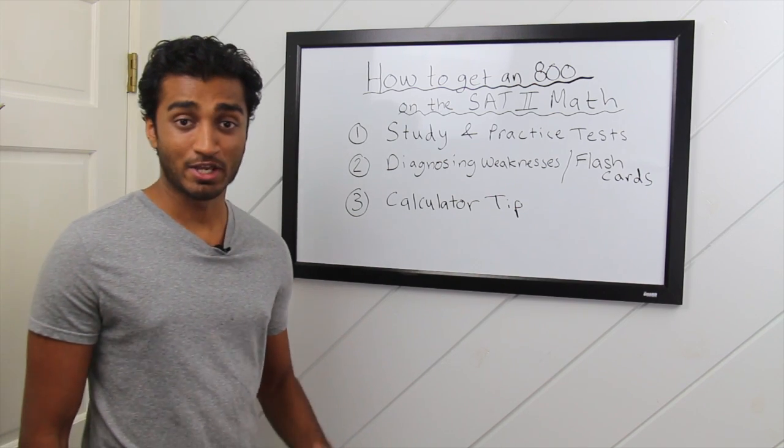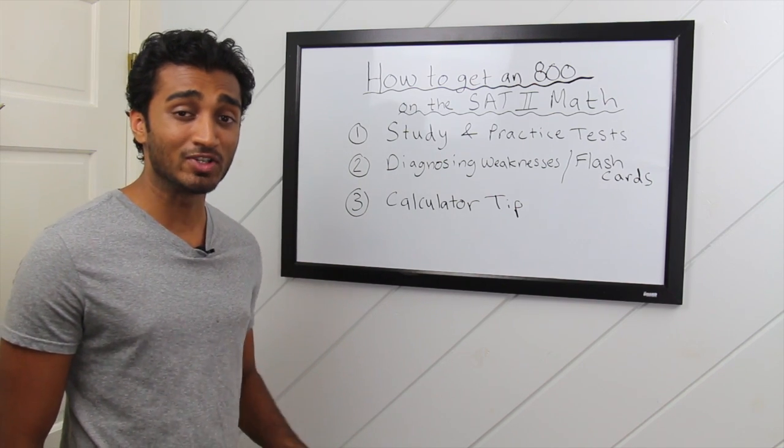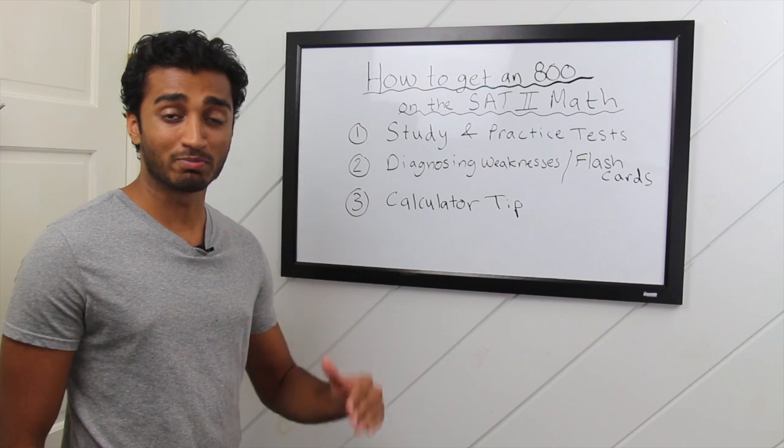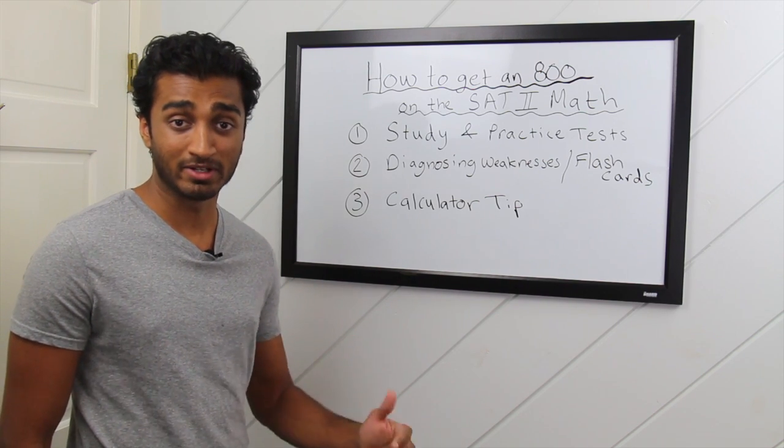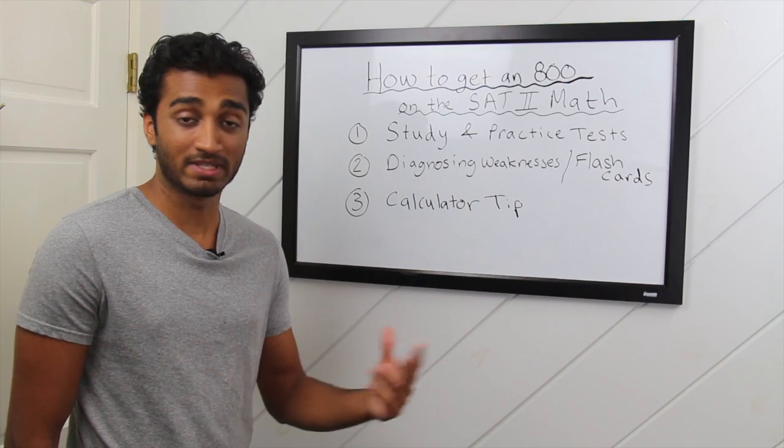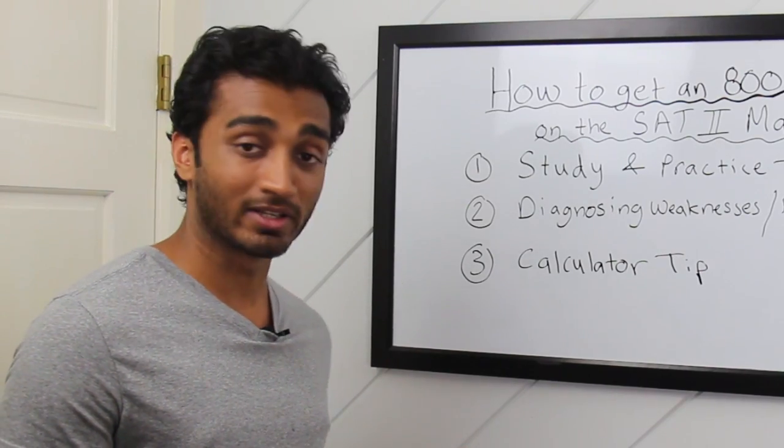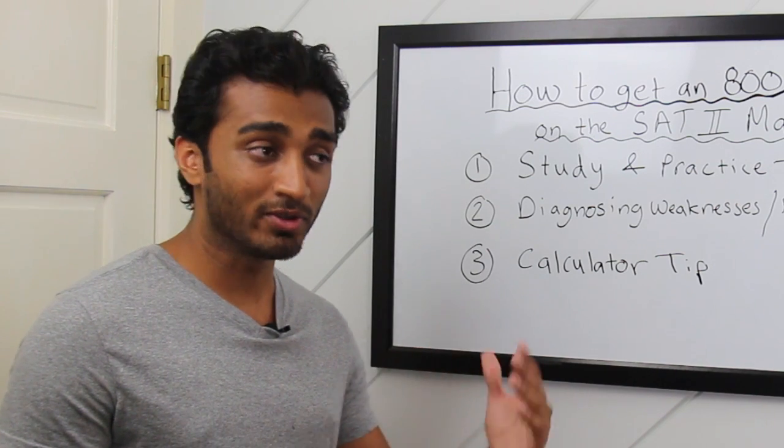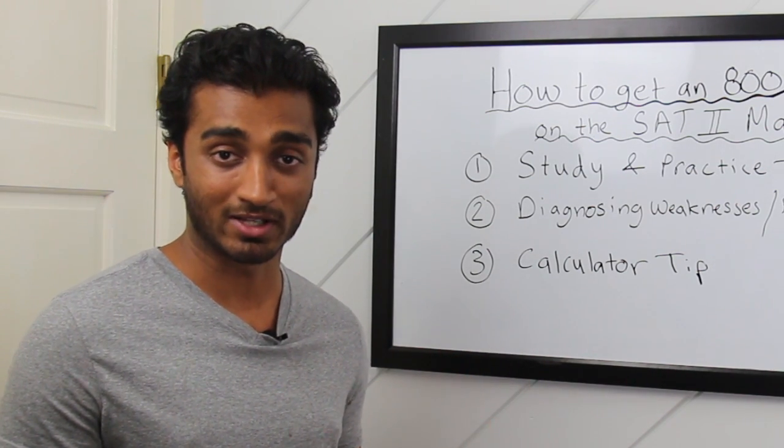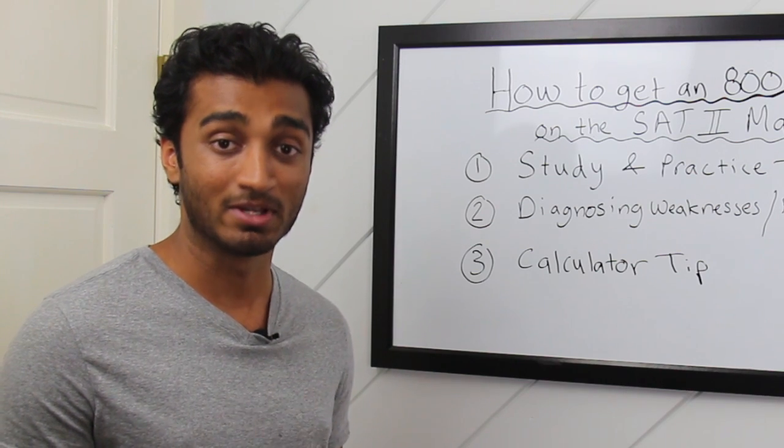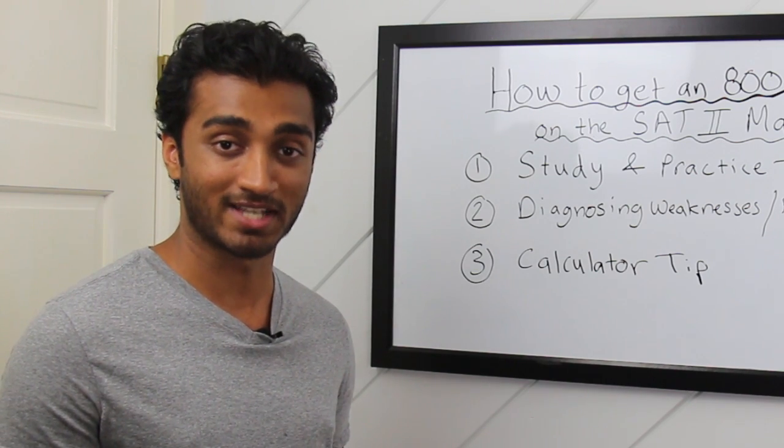In order to save time on test day, you want to program these formulas into your calculator. That way, you just plug in different variables like A, B, or C in the quadratic formula, and it spits out what x equals. In order to find out how to program these into your calculator, just simply Google them and go through the website and slowly enter in these programs into your calculator and make sure to practice them during your practice sessions and on your practice tests.